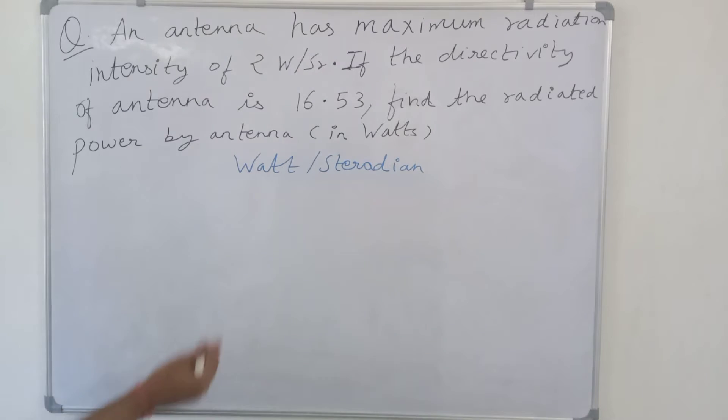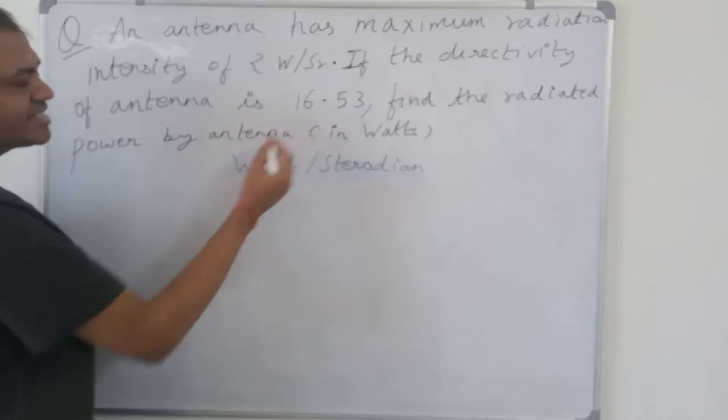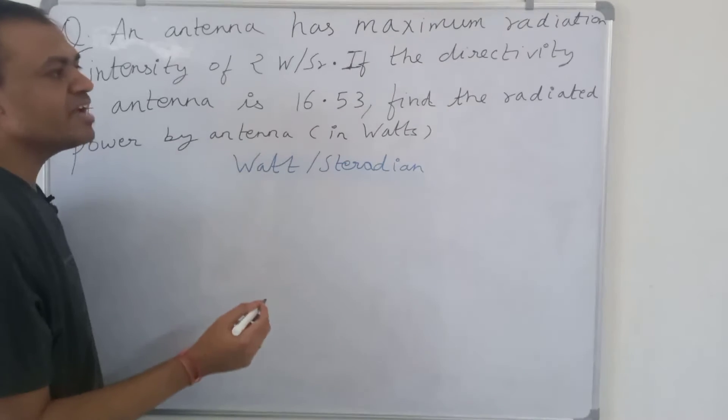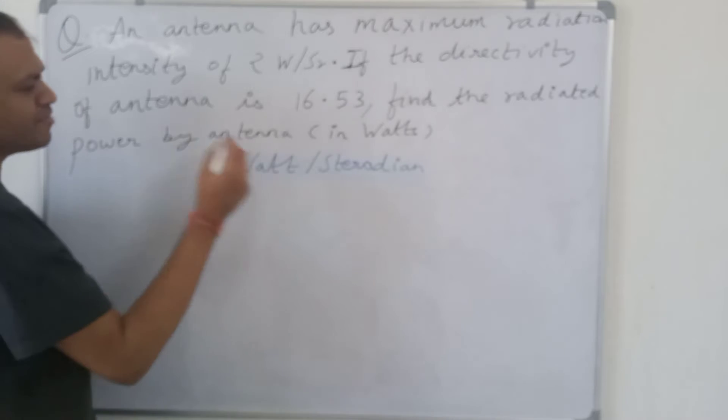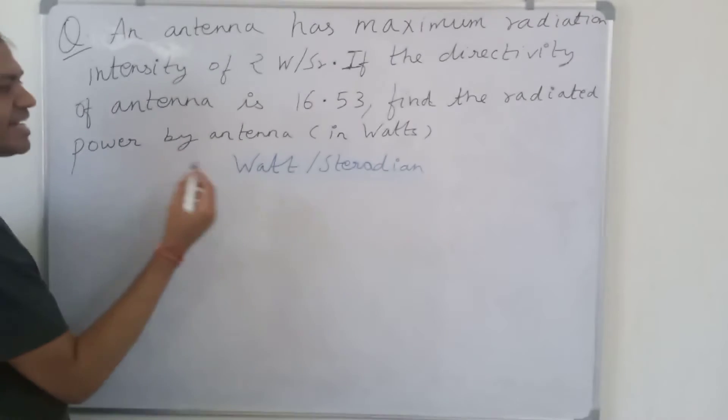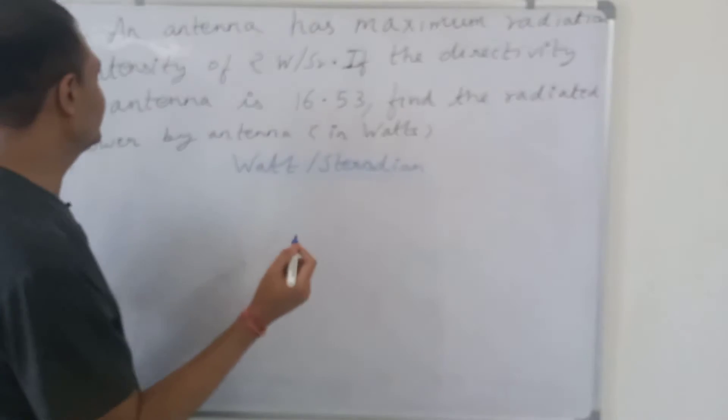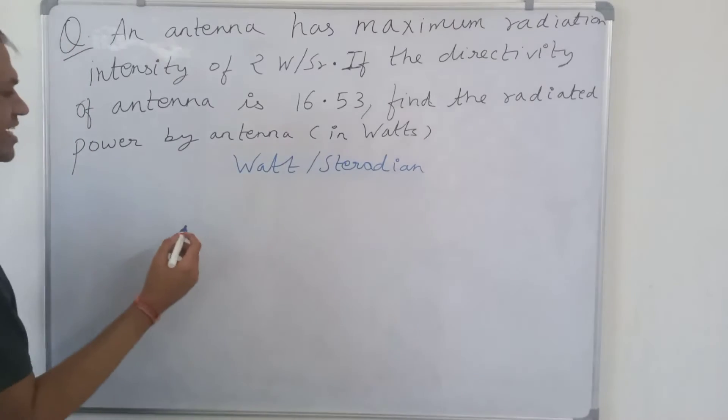The directivity of the antenna is 16.53, and we have to find the radiated power by the antenna.